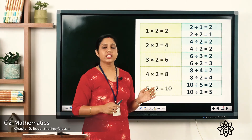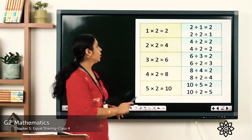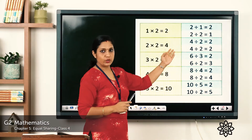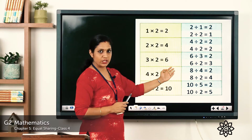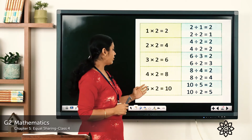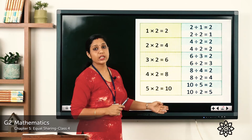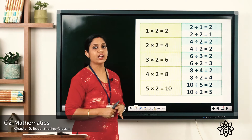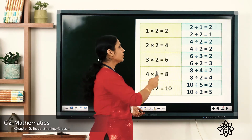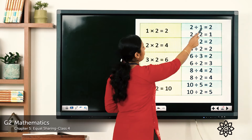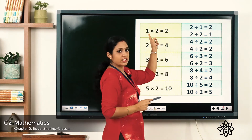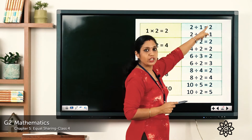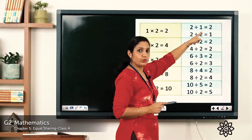So multiplication is the opposite of division. Here you can see the table of 2: 1 into 2 is 2, 2 into 2 is 4, 3 into 2 is 6, 4 into 2 is 8, 5 into 2 is 10. For 1 into 2 is equal to 2 in division form: we got the answer 2, so 2 divided by 1 — taking any of these numbers we get the other — 2 divided by 1 is equal to 2, and 2 divided by 2...